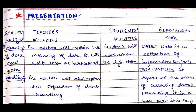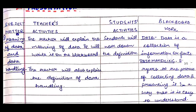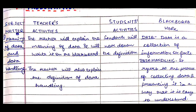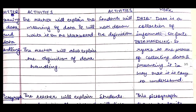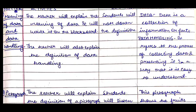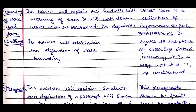The first subject matter is the meaning of data and data handling. The teacher will explain the meaning of data and write it on the blackboard; students will note down the definition. On the blackboard we write: Data — data is a collection of information or facts. The teacher will also explain the definition of data handling and write: data handling refers to the process of collecting data and presenting it in a way that is easy to understand.